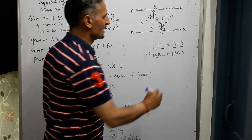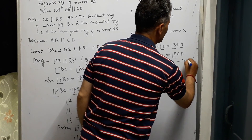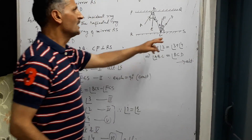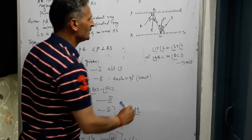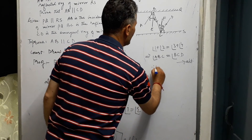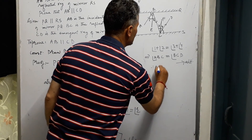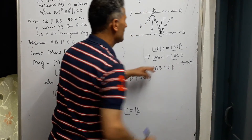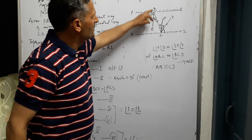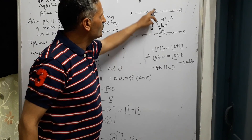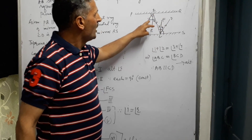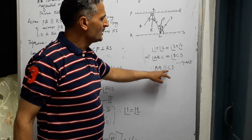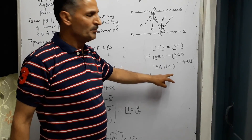Angles ABC and BCD are alternate angles. When alternate angles are equal, the lines are parallel. Therefore, AB is parallel to CD, because angle ABC equals angle BCD and these are alternate angles — hence the lines are parallel by theorem.